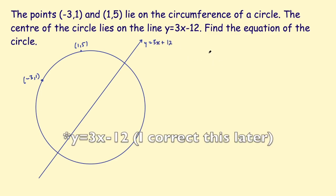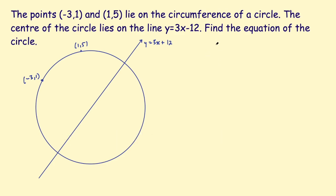The first thing I'll point out is the general equation of a circle looks like this: x minus a, all squared, plus y minus b, all squared, equals r squared, where r is the radius and (a, b) is the center. In order to find the equation of the circle we need the center and we need the radius. We don't have either of these things so we're going to have to work out both of them.